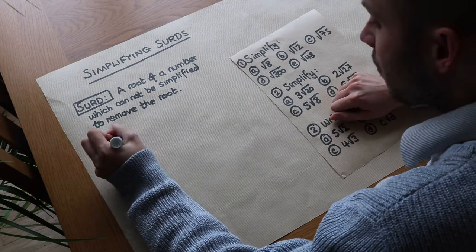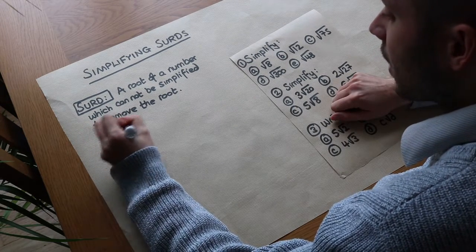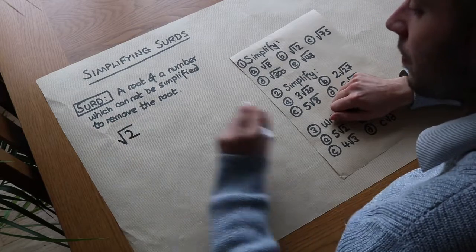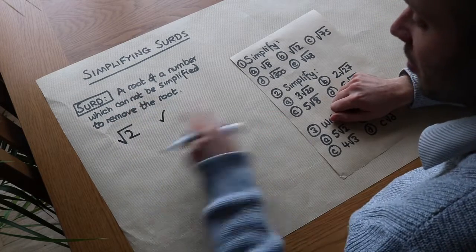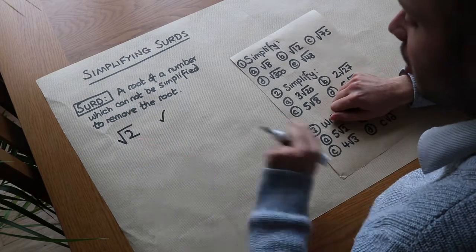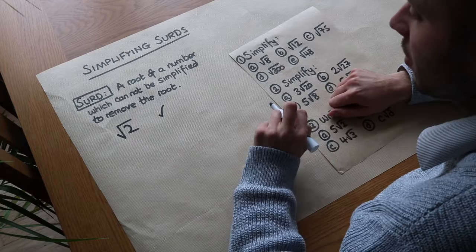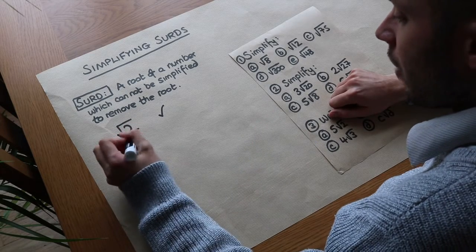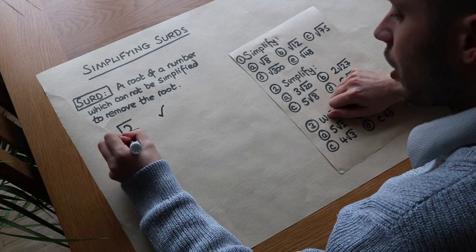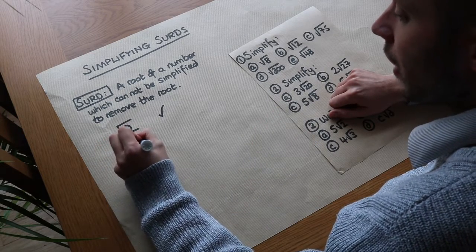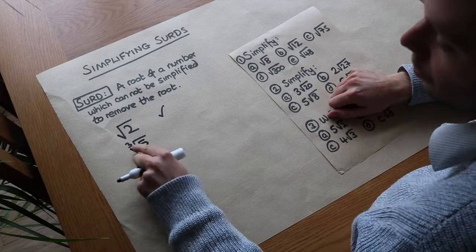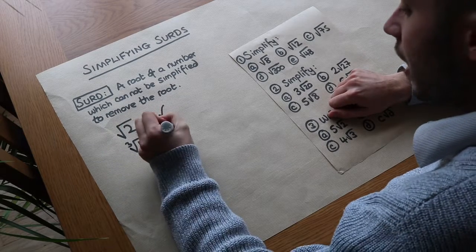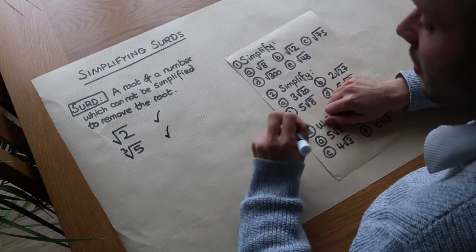To give you some examples: if I had the square root of two, that is a surd, because it's the root of a number and you can't simplify it to get rid of the root. If I had the cube root of five, that's still a root — it's a cube root — but it's still a surd.